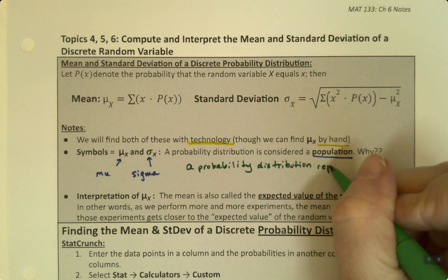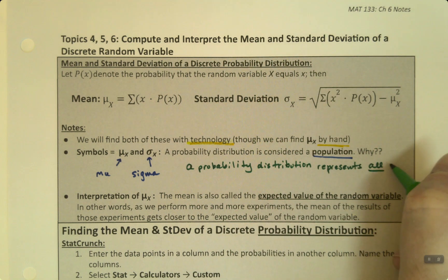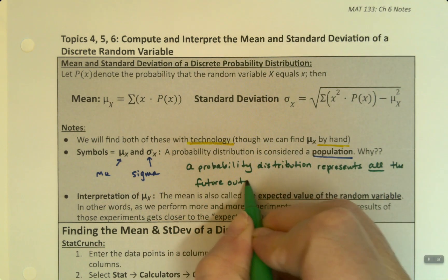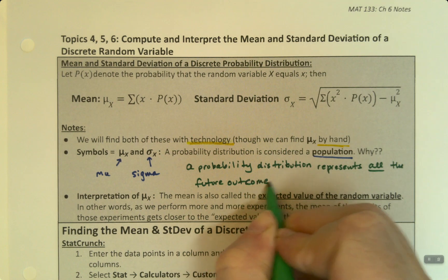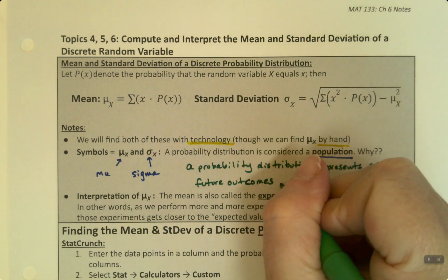So it represents all future outcomes of the experiment. And since it's all the future, all the possible future outcomes, it's a population.